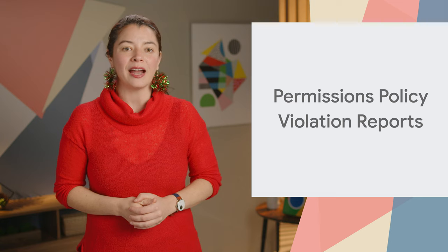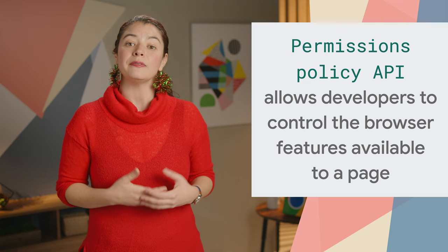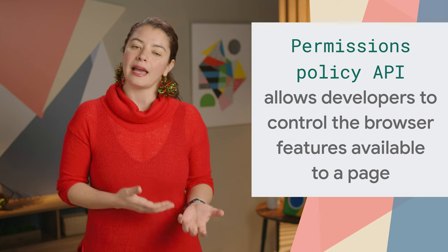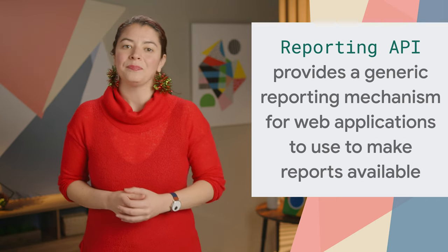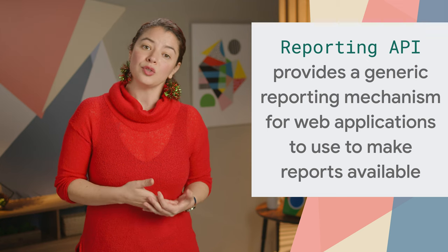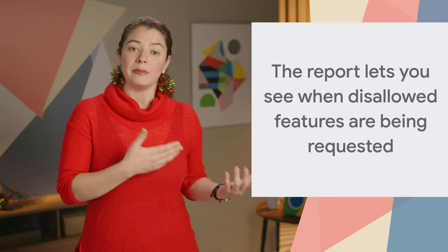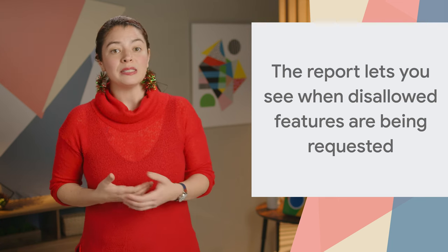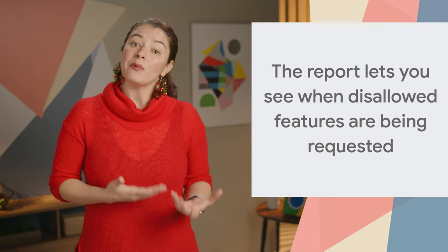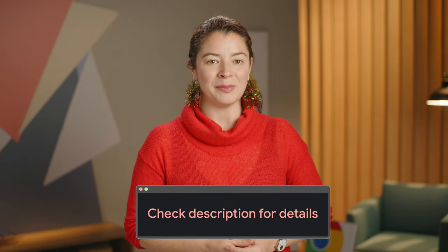Permissions Policy Violation Reports are now available. These reports integrate the Permissions Policy API, which allows developers to control the browser features available to a page, its iframes, and sub-resources by declaring a set of policies for the browser to enforce — with the Reporting API, which provides a generic reporting mechanism for web applications. This integration allows web developers to configure endpoints to which Permissions Policy Violation reports will be sent, allowing site owners to see when allowed features are being requested for their pages in the field. The link in the description includes the documentation to implement Permissions Policy Violation Reports.